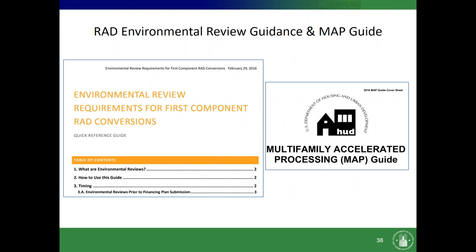Now talking about the environmental review guidance and the map guide. Both were revised in 2016. By 'map guide' I mean Chapter 9 of the Map Guide, which really goes over the processes. The document on the left is our quick reference guide, which talks more about our programmatic requirements for RAD.